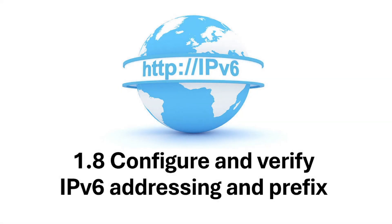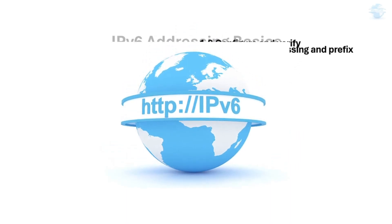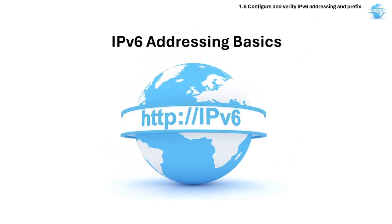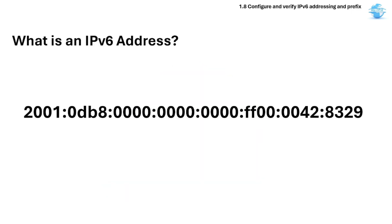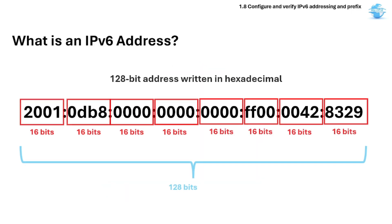Section 1.8 is about IPv6 addressing and prefix. Let's start with IPv6 addressing basics. IPv6 is a 128-bit address written in hexadecimal and divided into 8 groups, each 4 hex digits.